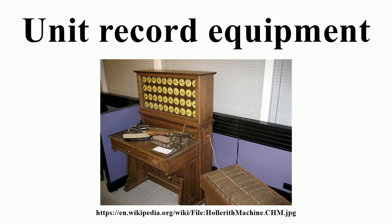A collator had two input hoppers and four output pockets. These machines could merge or match card decks based on the control panel's wiring, performing operations comparable to a database join. An interpreter would print characters equivalent to the values of columns on the card; the columns to be printed could be selected and even reordered based on the machine's control panel wiring. Later models could print on one of several rows on the card. Unlike key punches, which printed values directly above each column, interpreters generally used a font a little wider than a column and could only print up to 60 characters per row. Typical later models include the IBM 550 Numeric Interpreter and the IBM 557 Alphabetic Interpreter.